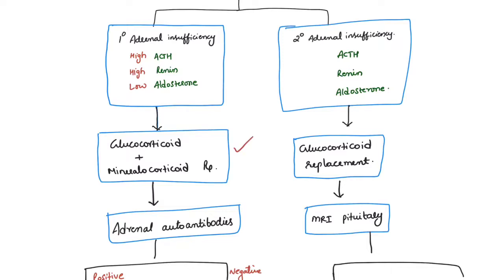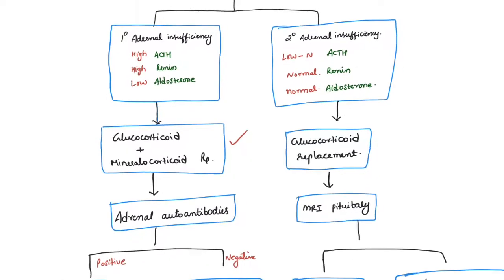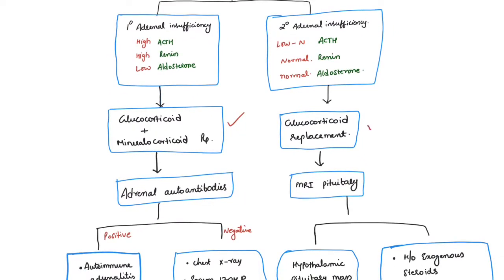In addition, routine blood work shows a complete blood picture with normocytic anemia, lymphocytosis; serum sodium is decreased, serum potassium is increased; creatinine and urea may be slightly increased because of decreased perfusion to the kidneys; and TSH may be decreased. Once the diagnosis of adrenal insufficiency is confirmed, we need to further investigate to find the actual reason. For the differential diagnosis, we need to do serum ACTH, aldosterone, and serum renin levels. In primary adrenal insufficiency, because the adrenal gland cannot secrete enough cortisol, there is high production of ACTH from the pituitary. Renin levels are also high because of hypotension, but aldosterone levels are low because there is mineralocorticoid deficiency.